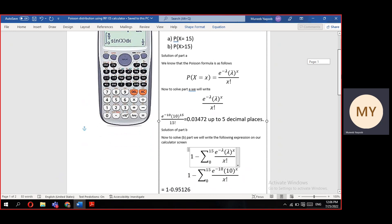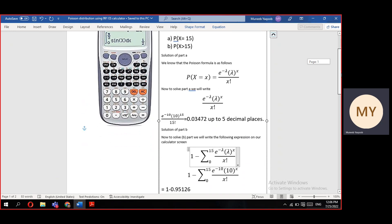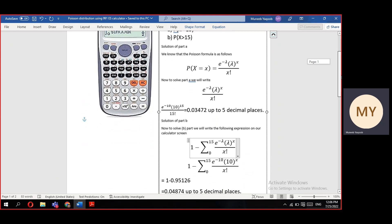Now how to solve part B. In part B, we need to calculate probability of X greater than 15. To calculate this probability,